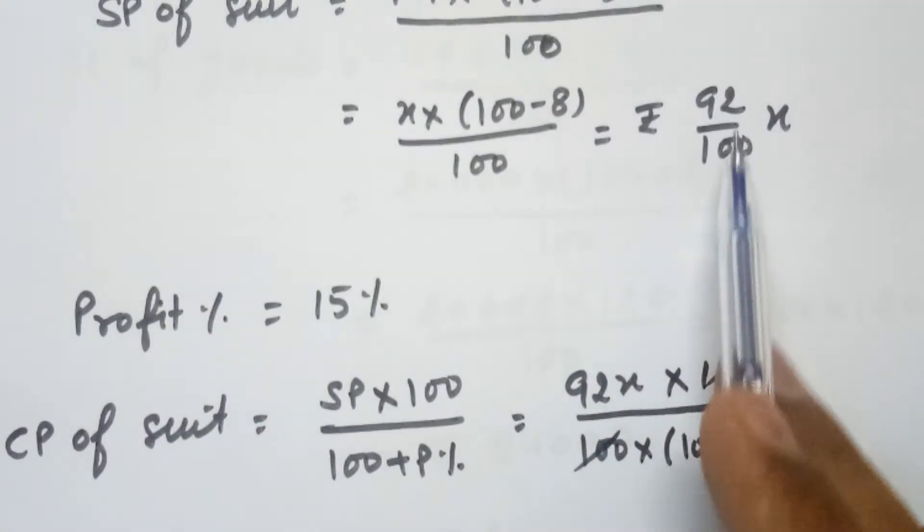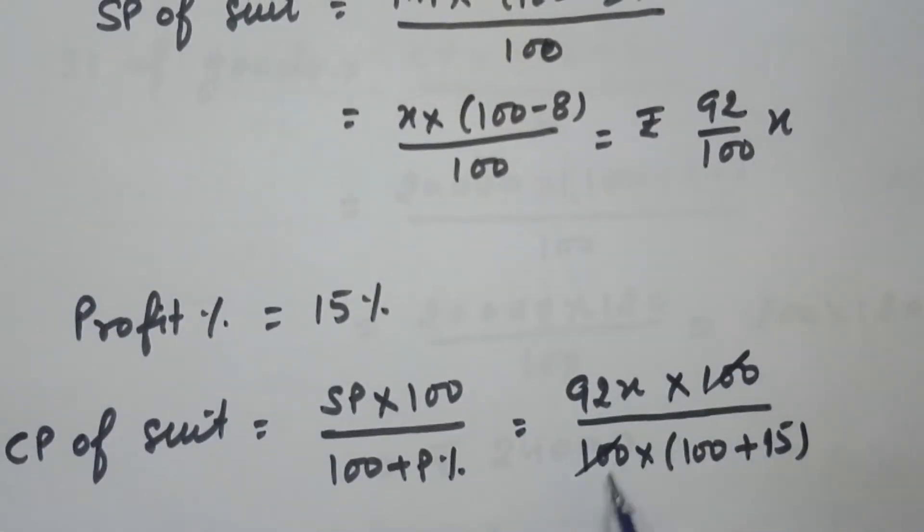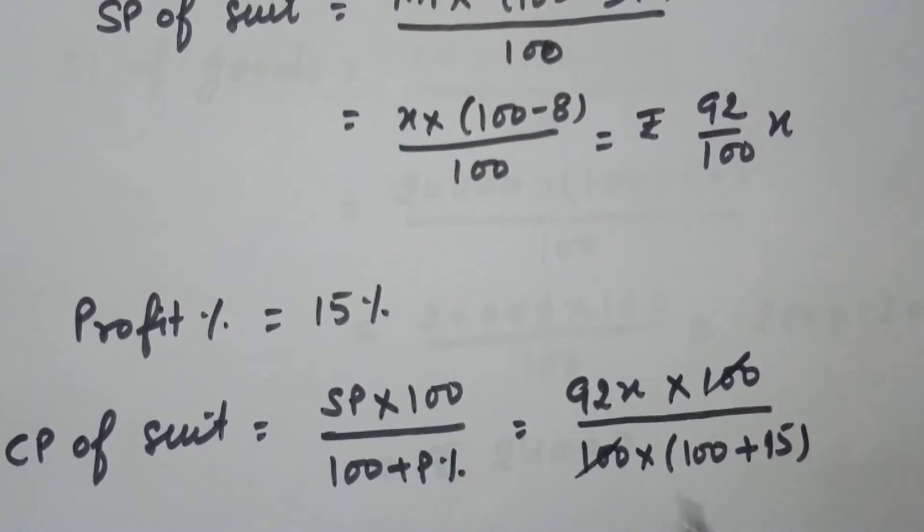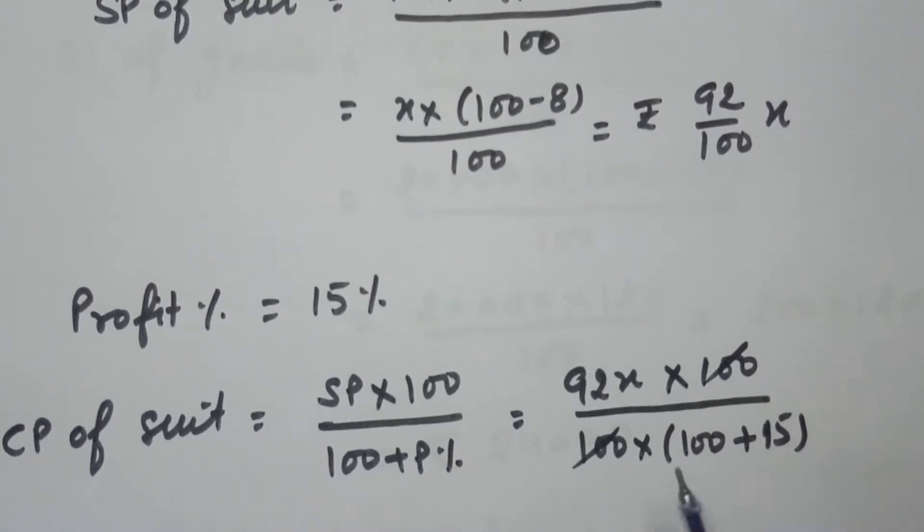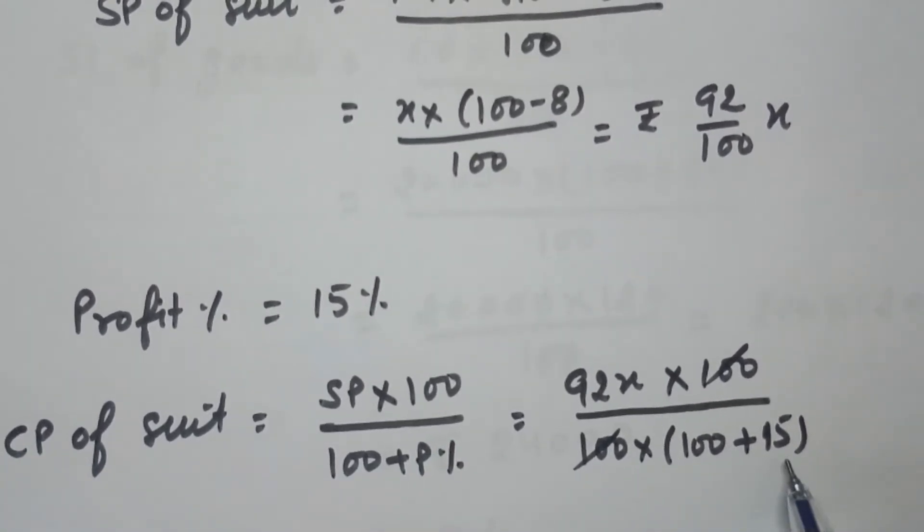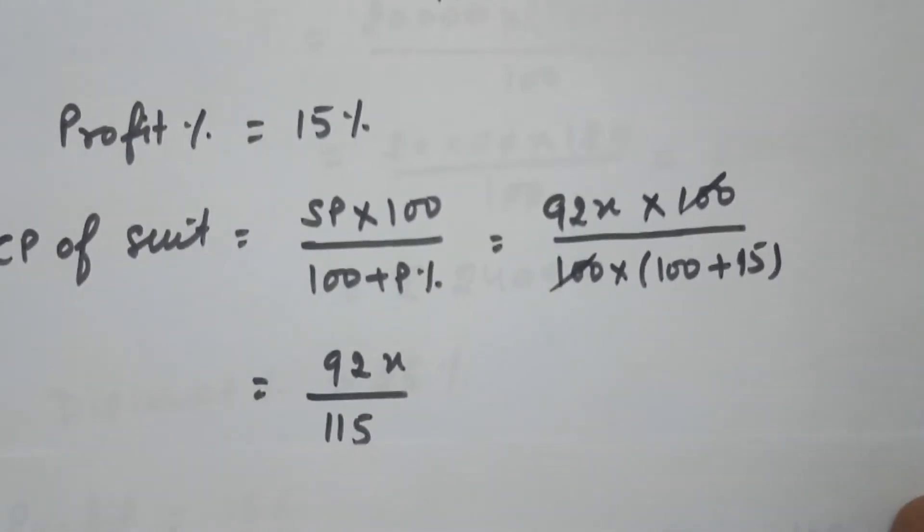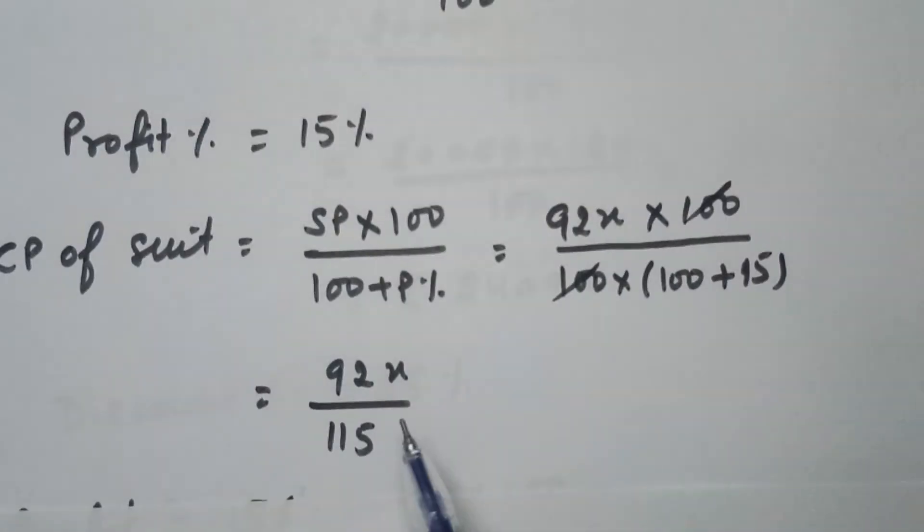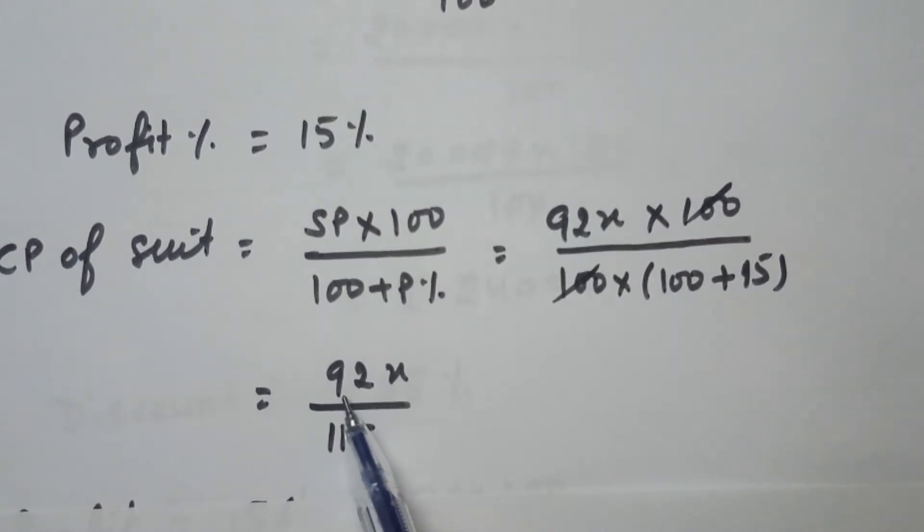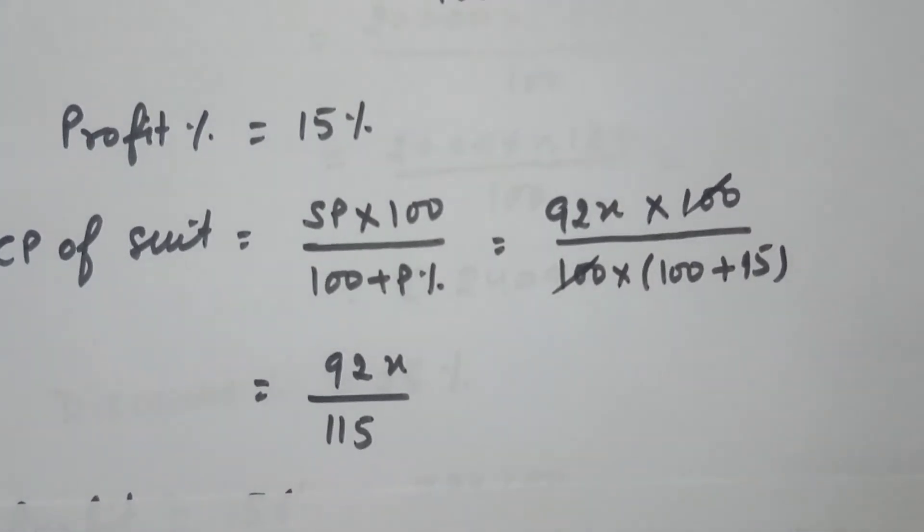Now selling price is 92 over 100X. So 92X over 100 times 100 plus profit percent. Profit percent is 15%, so 100 plus 15. Now you can see the cancellation here, 100 cancel 100. So it comes Rs 92X over 115.